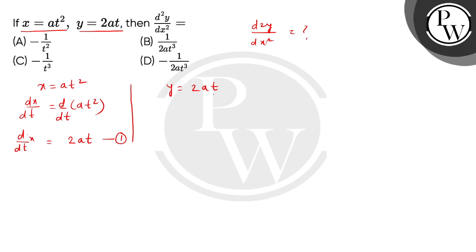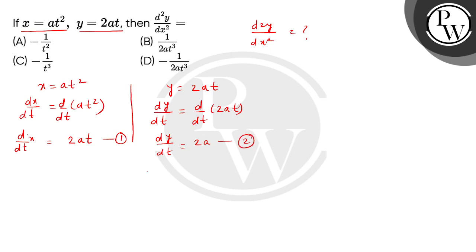अब बच्चों, similar process करेंगे हम y के साथ में — find first order derivative of y with respect to t. So this is dy/dt of 2at, so यहां से हमें dy/dt की value मिल जाएगी 2a. This is equation number 2.